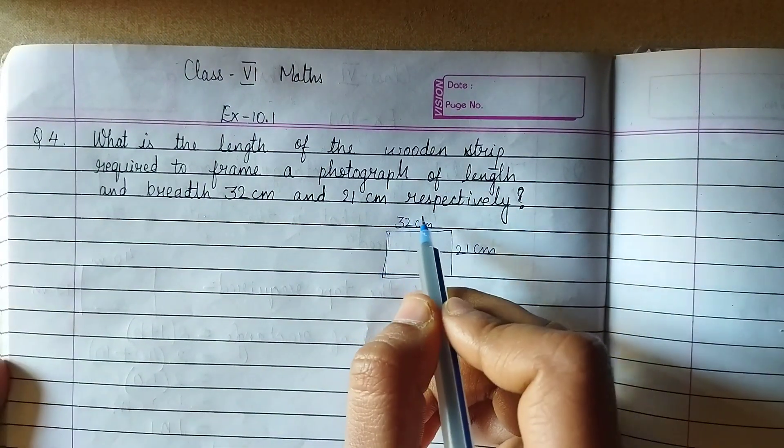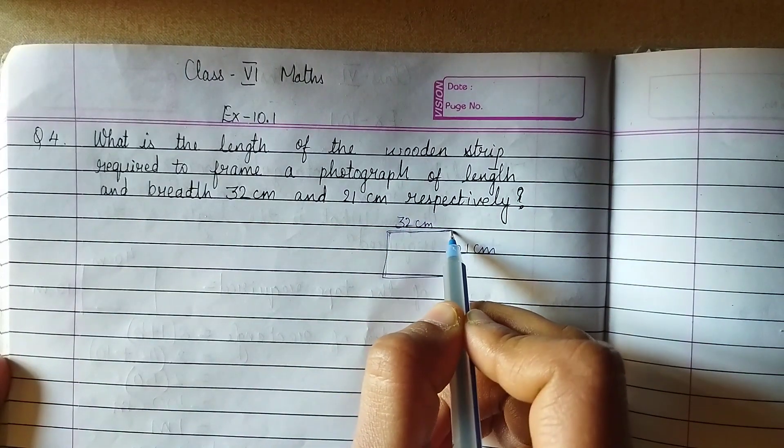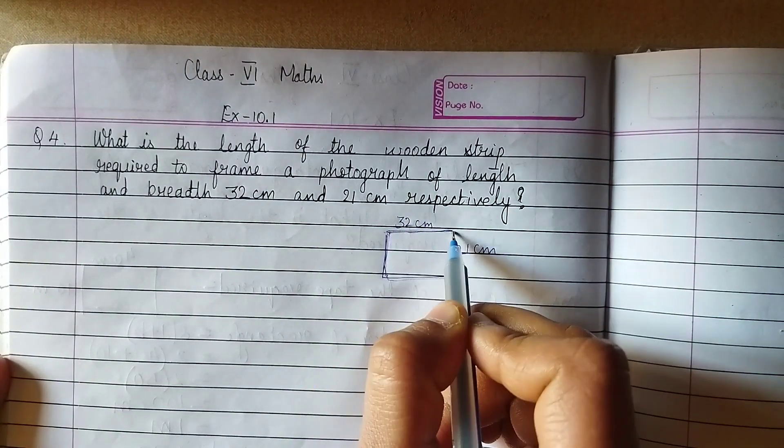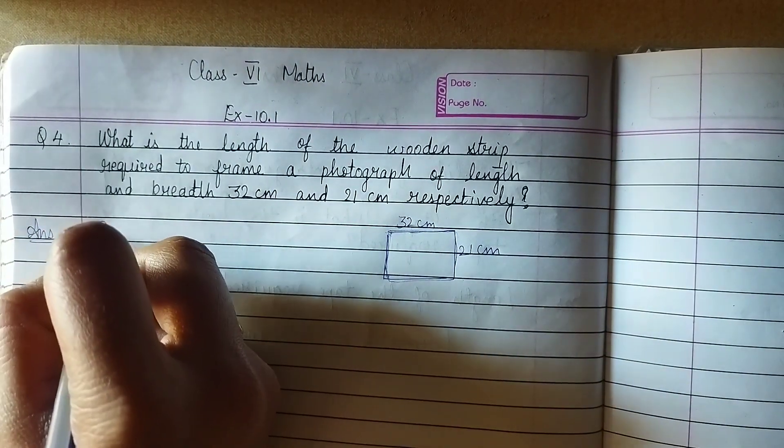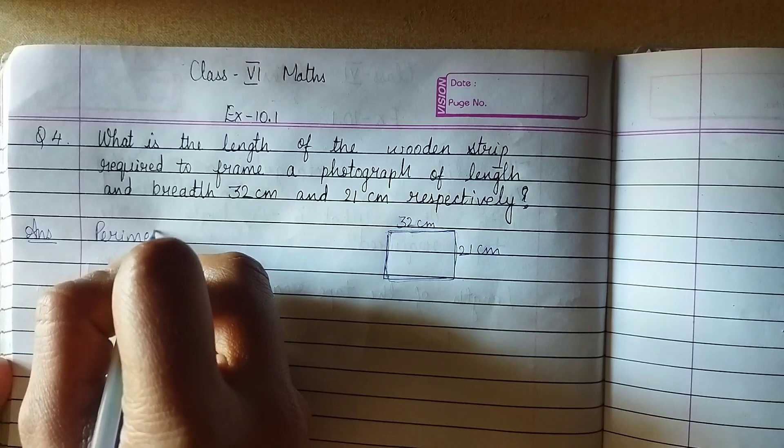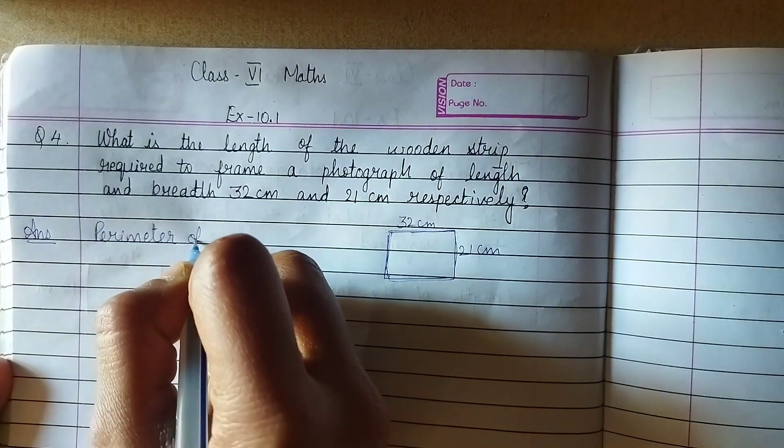Now we have to find out how much wooden strip is needed. So we have to find the perimeter. Perimeter of rectangle.